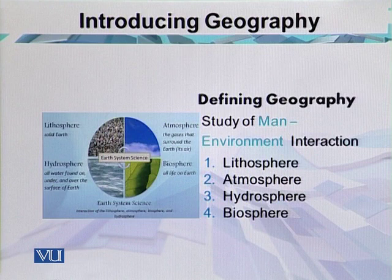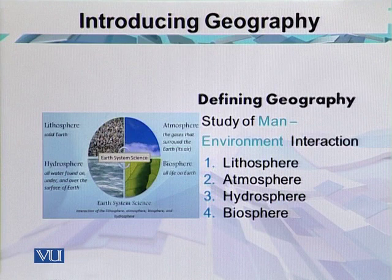The third most important area is the hydrosphere, which covers 71% of the total area of the planet. This part of the world is covered with major oceans, major water bodies, as well as rivers, surface water, and groundwater.